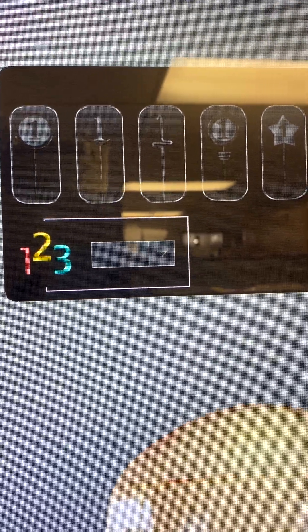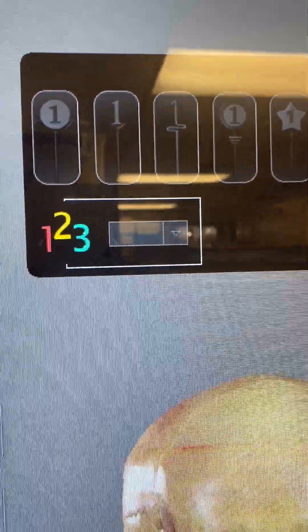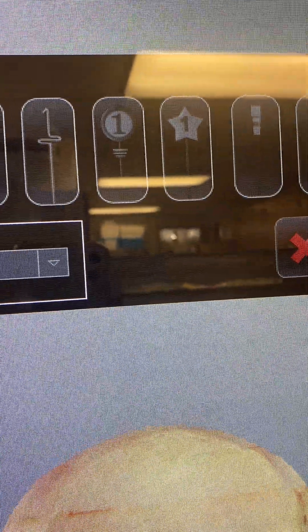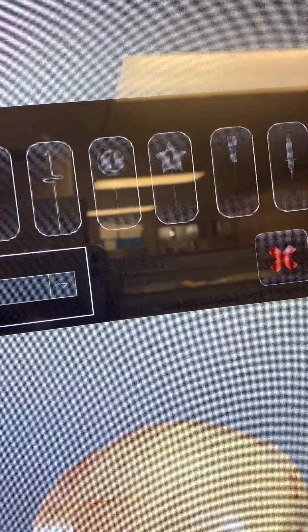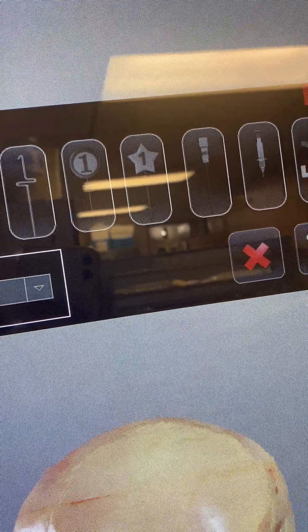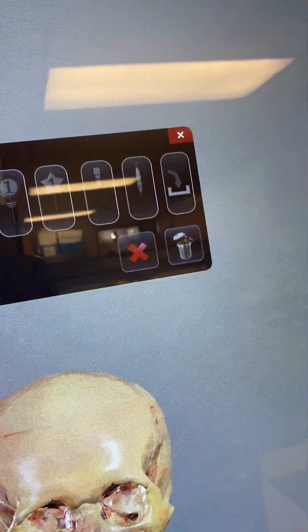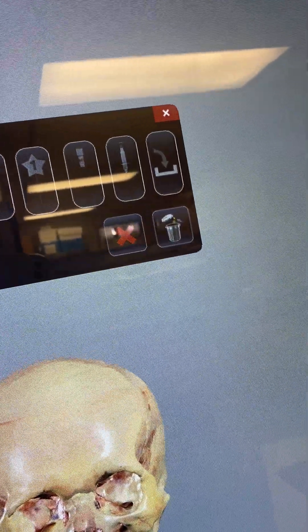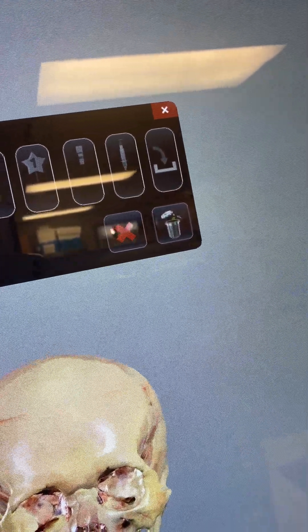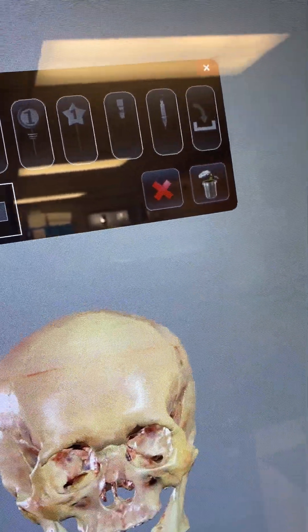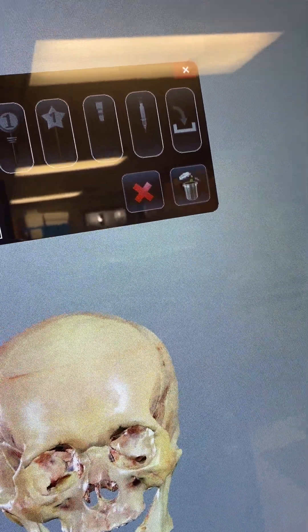Number six and number seven allow you to place a syringe or a lumbar needle. The last one is the icon for you to import a custom model into the software. For example, that's required for medical devices or implants or other things to import into the software.